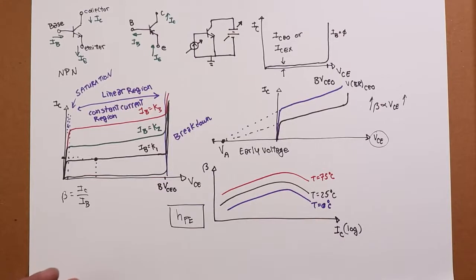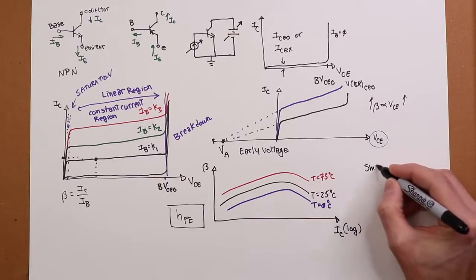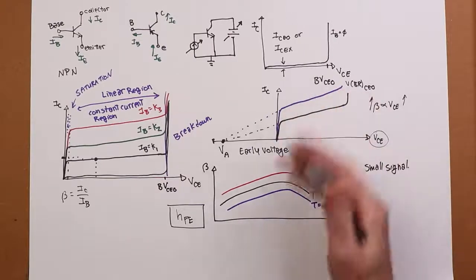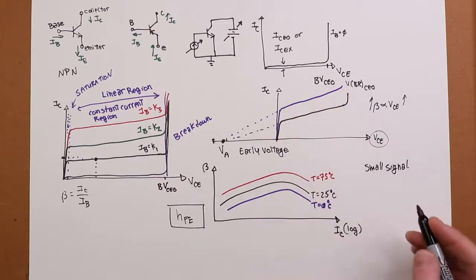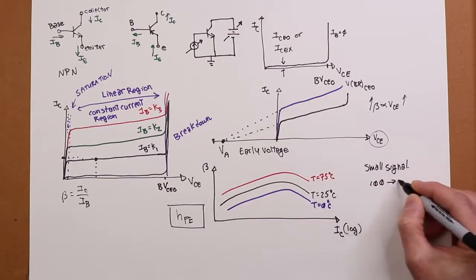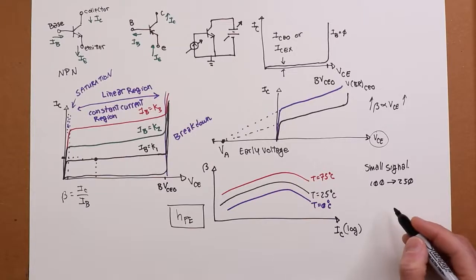So, if you grab a typical small signal transistor, you might have a beta in the range of, for typical voltages and currents at room temperature, maybe 100 to 250. Power transistors are going to be a bit smaller than this, maybe 40, 50, something like that on the low end.